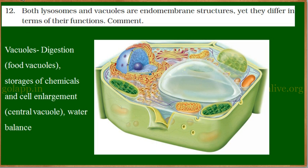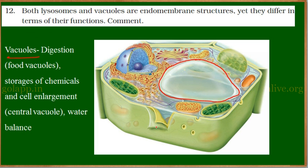Now let us look at vacuoles, whose function is totally different. Vacuoles differ across different cells. In plant cells, a large central vacuole is present, whereas in animal cells many small vacuoles are present. In lower organisms, there are two types: contractile vacuoles and food vacuoles. Food vacuoles help in digestion of food, and contractile vacuoles help in removing excess water which enters inside the cell.